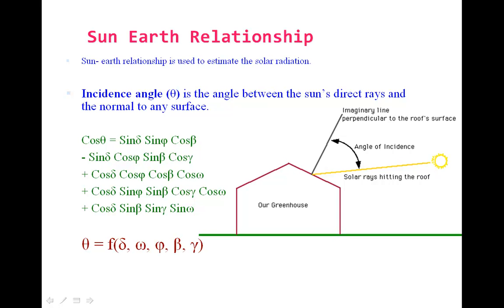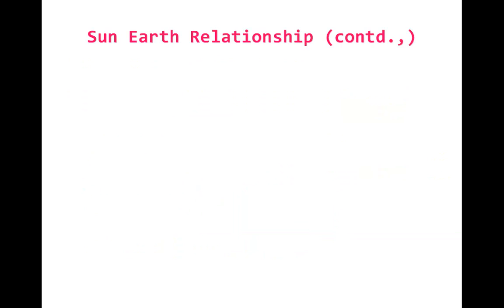Beta, the tilt angle, is from the given orientation of the surface. Finally, the gamma, the surface azimuth angle, can be calculated from the given orientation of the inclined surface.